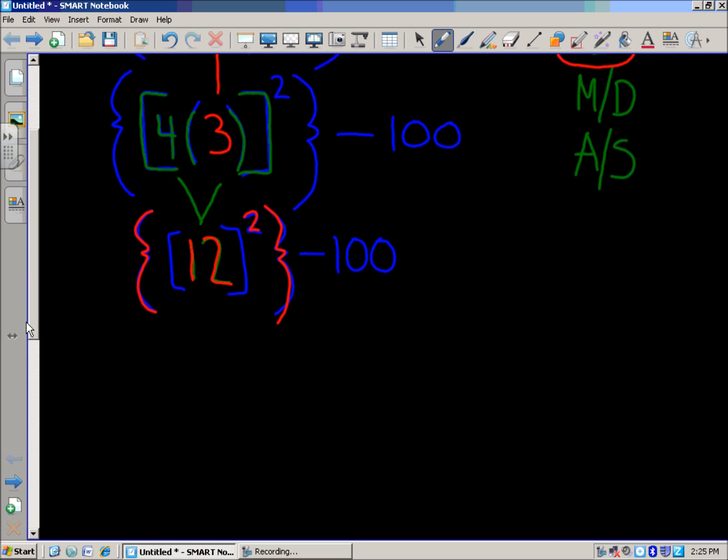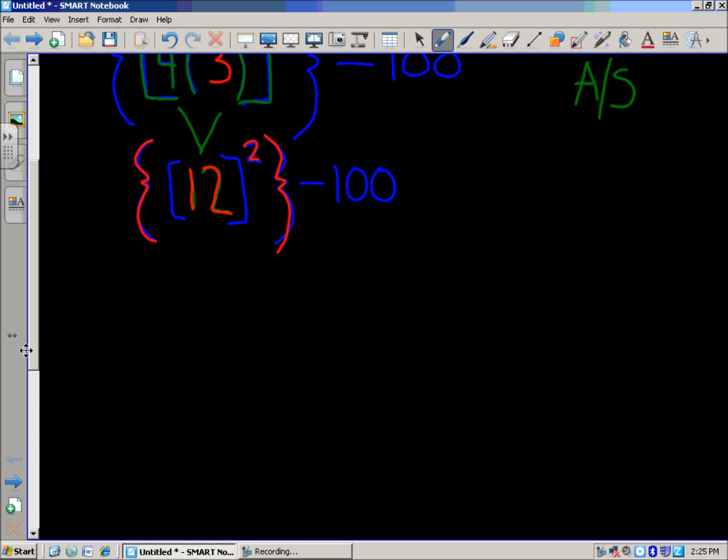So give ourselves some room here. I've got twelve to the second power. What does that mean? This number here in the exponent tells us to multiply the number inside here by itself two times. I'll have twelve two times and I'm going to multiply those together. So now I'm looking at twelve times twelve, still in the braces, minus one hundred.